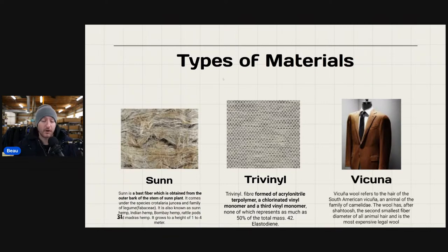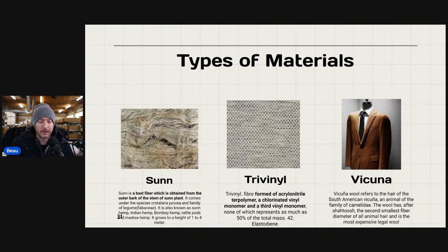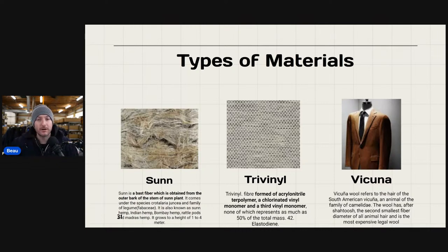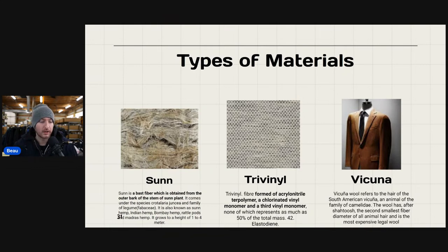The next one is my favorite — vicuña. If you ever find vicuña anything out there, you pick it up. Go type in 'vicuña t-shirt' on Google or eBay and tell me what they're selling for. Vicuña wool refers to the hair of the South American vicuña, a member of the Camelidae family. It has the second smallest fiber diameter of any animal hair and is the most expensive legal wool. If you're sourcing and find it somehow, pick it up as fast as you can no matter the price.